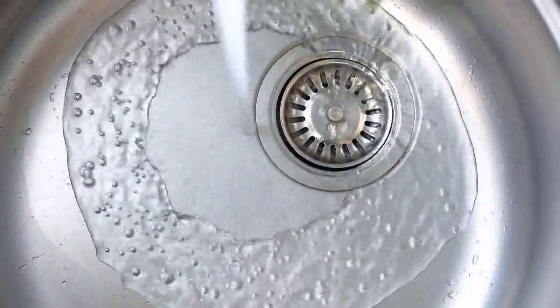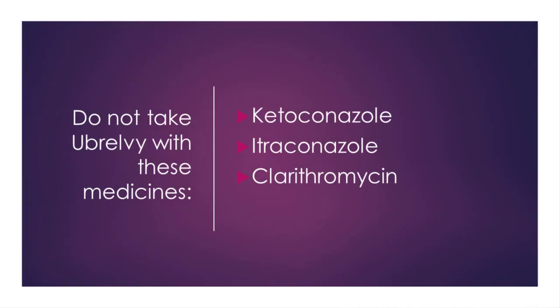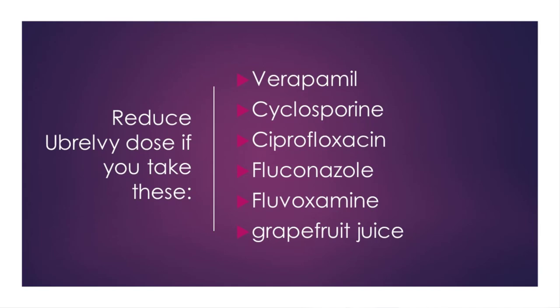Here's what to watch out for with Ubrelvi. First, things that affect Ubrelvi levels in your body. These things interact with an enzyme called cytochrome P450, or CYP. Cytochrome P450 is like the drain in the bottom of the sink that lets the water out when you're done with it. Things that slow or block cytochrome P450 can lead to an overflow of Ubrelvi and may lead to unwanted effects. The medicines ketoconazole, itraconazole, and clarithromycin completely block cytochrome P450, so you shouldn't take these medicines if you take Ubrelvi. These six things reduce the activity of cytochrome P450, so talk to your doctor about a reduced dose of Ubrelvi. There are two important things to call out here. One is verapamil, which is a common migraine prevention drug, and another is grapefruit juice, which is a common breakfast drink.